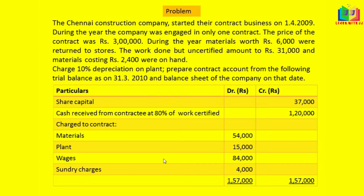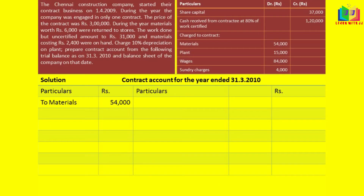The trial balance was given. Using this trial balance, we have to prepare the contract account and then we have to prepare the balance sheet. Let us start doing the contract account first. I have written the materials — 54,000 is the value of material. The next one is wages.